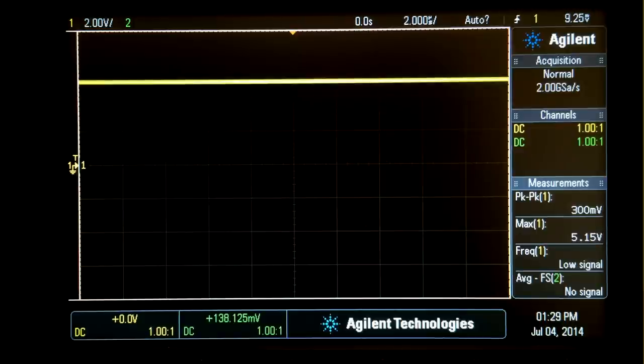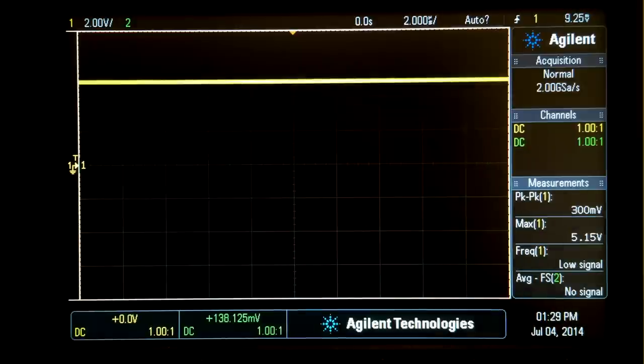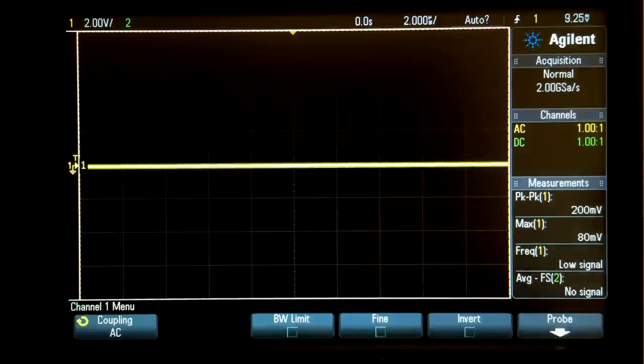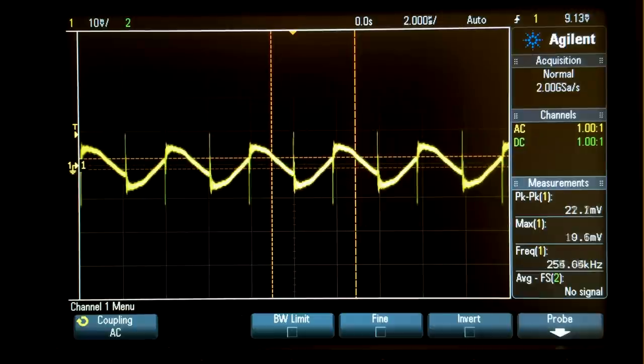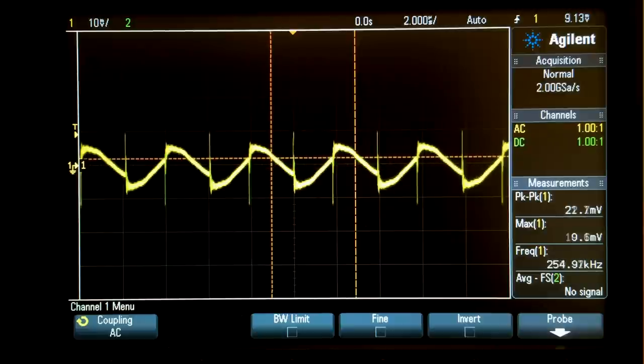Remember when I said we were getting a perfect 5 volts? I lied. Let's change the coupling on the oscilloscope to AC coupling and zoom in. You can see that there is a small AC component on the output because our low pass filter isn't perfect. We call this the output ripple of the power supply because it looks like little wave ripples. We have about 20 millivolts of ripple and noise with a 3 amp load.